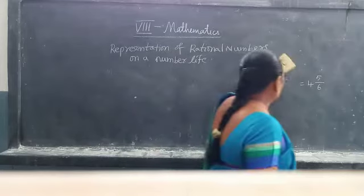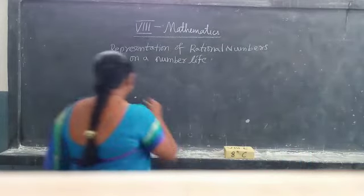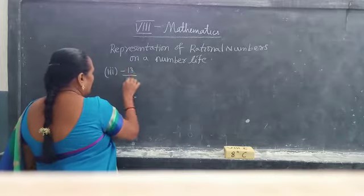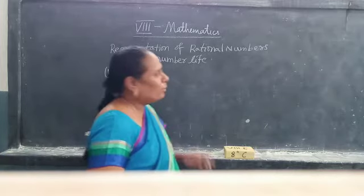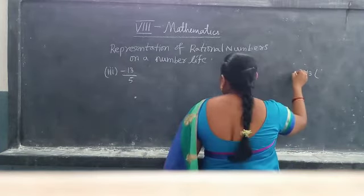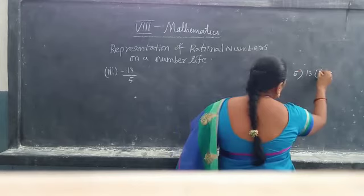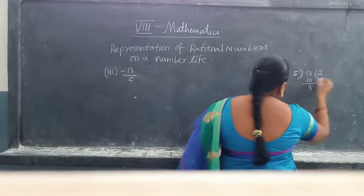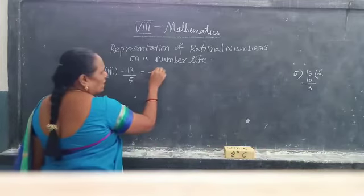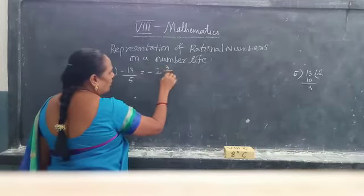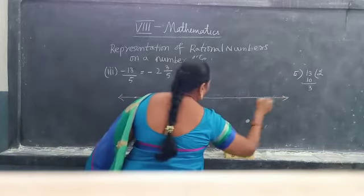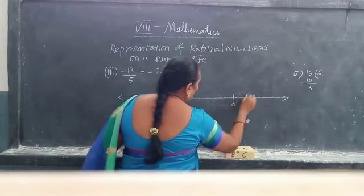Next, we will represent a negative rational number: minus 13 by 5. It is also an improper fraction, so change it into a mixed fraction. 13 by 5: 5 goes into 13 twice giving 10, remainder 3. So this can be written as minus 2 and 3 by 5. Where does it lie? It lies between minus 3 and minus 2, so we have to go to the negative side.